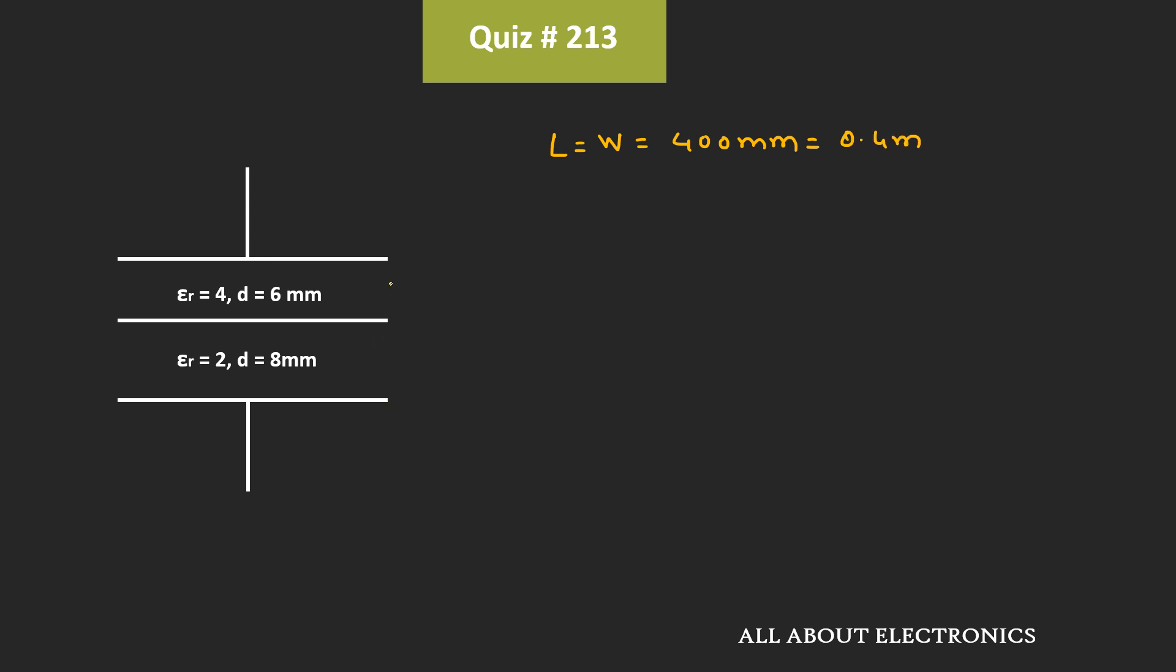And the distance between these two plates is equal to 14 mm. And this 14 mm space is filled up with two dielectrics. So due to the first dielectric, the capacitance is equal to C1, while due to the second dielectric, the capacitance is equal to C2. So the total capacitance or C equivalent is equal to C1C2 divided by C1 plus C2, because these two capacitors are connected in series.